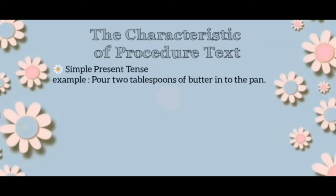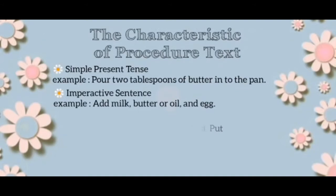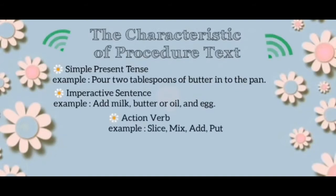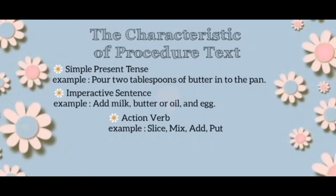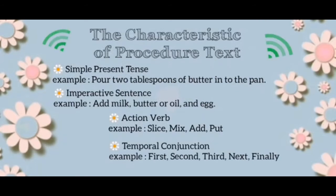There are characteristics of procedure text: using simple present tense, using imperative sentences, using action verbs — for example, slice, mix, add, put — and also using temporal conjunctions, for example, first, second, third, next, finally.